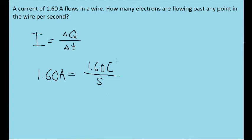This capital C here is the dimension for coulombs. This tells us how many coulombs of charge are passing through any point in the wire per second. But we want to find the number of electrons flowing through any point, not the number of coulombs.